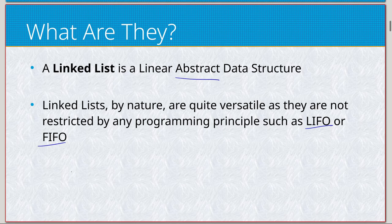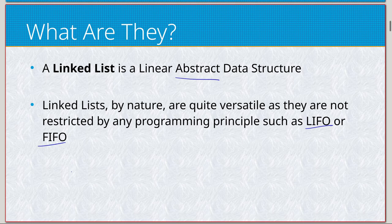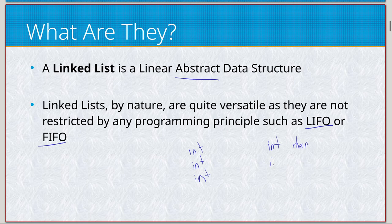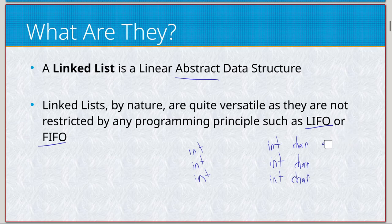I'll explain what LIFO and FIFO are in future videos, but just know that with linked lists they are completely open to design however you want them to be used — whether they're going to be in a single direction or multi-directional, if you want to add data in the middle, at the end, or at the beginning. As long as they are linked together in some facet in a linear fashion, you have a linked list. They're pretty arbitrary by design. By 'abstract' it just means it can be whatever you want.